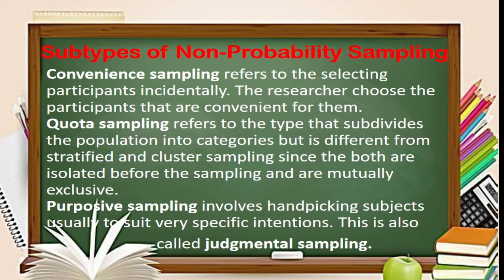Purposive sampling involves hand-picking subjects, usually to suit a very specific intention. This is also called judgmental sampling. For example, in a study about honors students, the researcher uses a list of honors students and chooses the necessary number of respondents, to the exclusion of all other students.